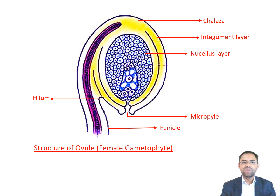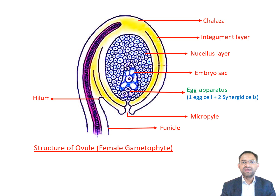The embryo sac or female gametophyte is located in the nucellus. An ovule generally has a single embryo sac, which is formed from a megaspore through meiosis. A typical embryo sac is an eight-cell structure at maturity. A group of three cells lying towards the micropyle end is called the egg apparatus. The central cell of the egg apparatus is known as the egg cell and it forms the female gamete. The other two cells, one on each side of the egg cell, are called synergids. The egg cell after fusion with the male gamete gives rise to the embryo, and the synergids are non-functional, short-lived and disintegrate soon after fertilization.